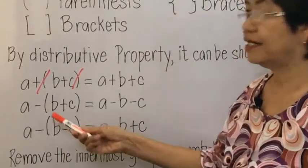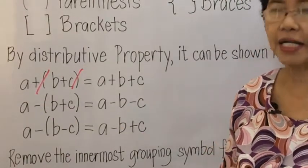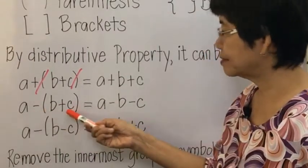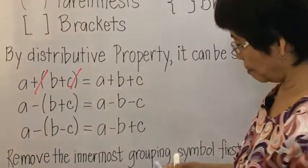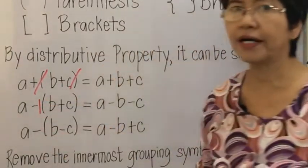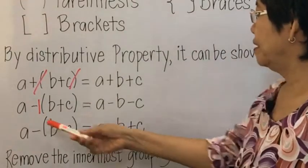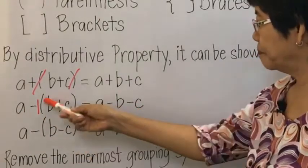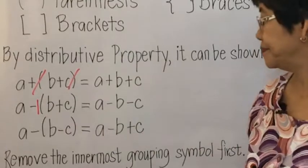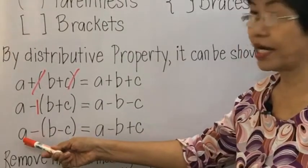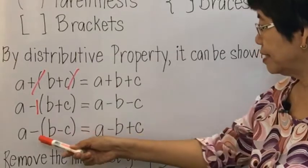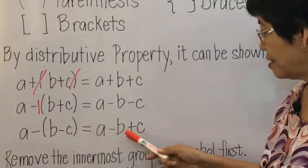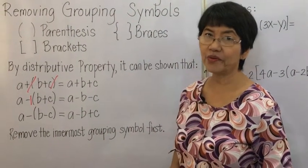If a grouping symbol is preceded by a negative sign, the sign affects the signs inside — it is as if you are multiplying by negative 1. So the result becomes negative B and negative C. For example, A minus the quantity B minus C gives A minus B plus C, because the sign of C changes.